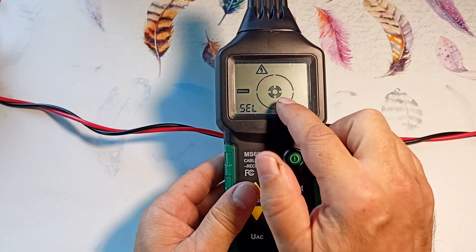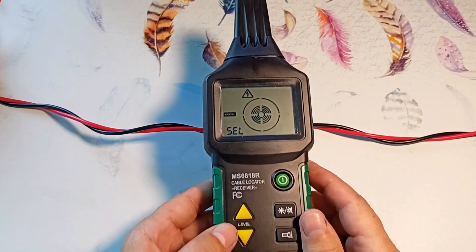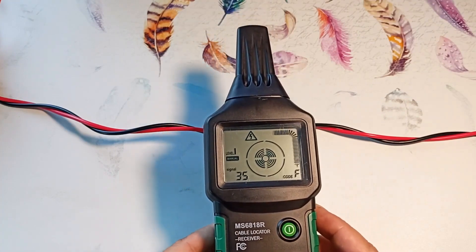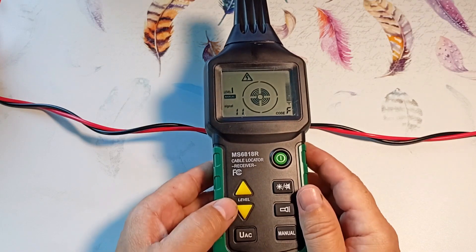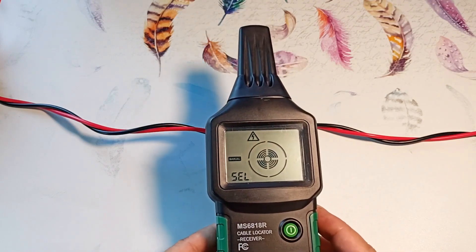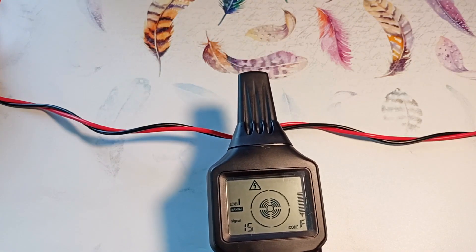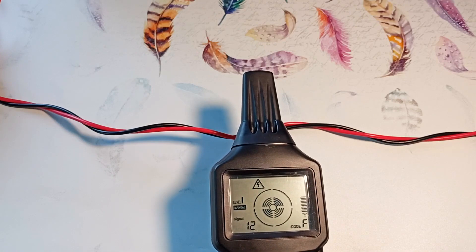Using the up and down buttons we can adjust the sensitivity. The more circles on this indicator, the higher the sensitivity. Here we go. We adjusted the sensitivity. It's rising. We lower it, the signal decreases. We bring it closer to the wire. And the device senses it again.